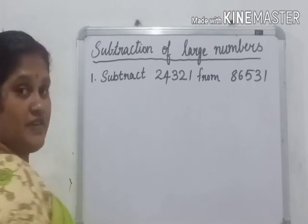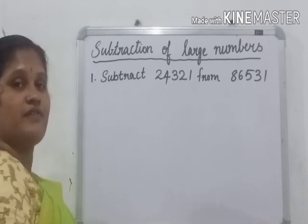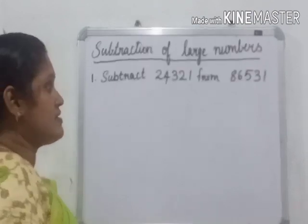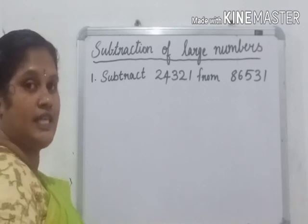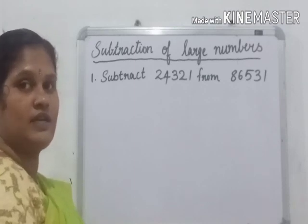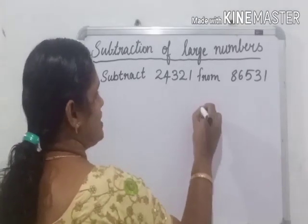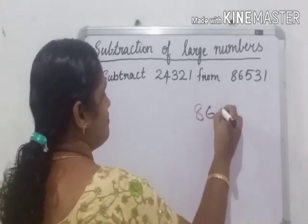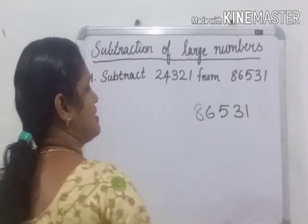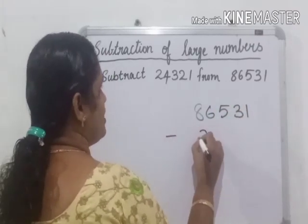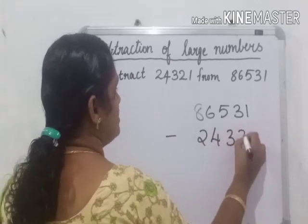What is the first step? The first step is to write the larger number at the top. Here, which is the larger number? 86,531 is the larger number, minus 24,321.